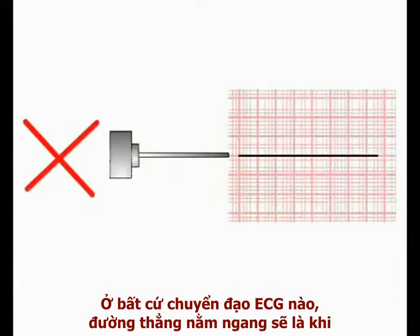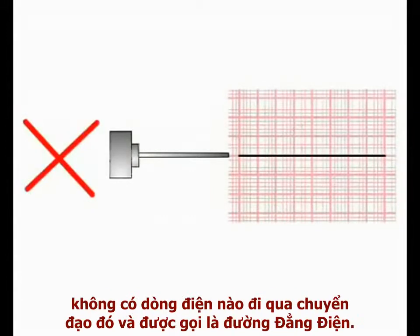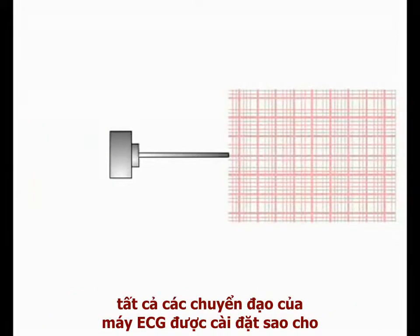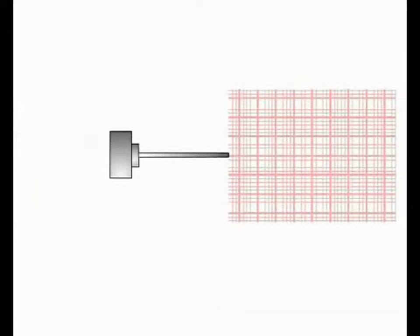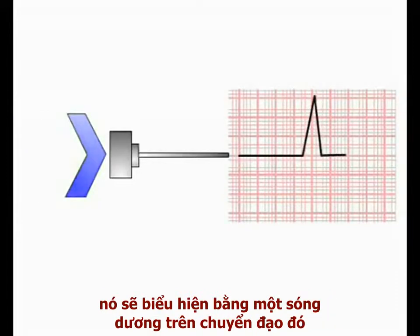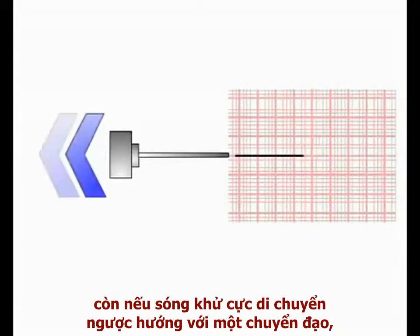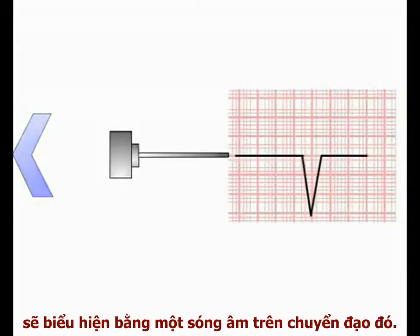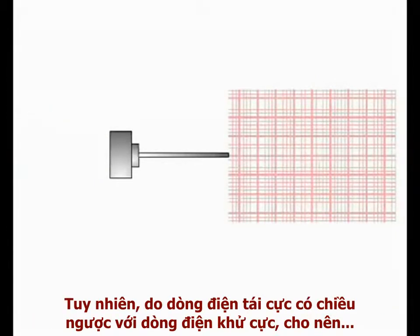In any ECG lead, the flat line recorded on the readout when no net current is flowing is termed the isoelectric line. It is very important to realize that all of the ECG leads are set up such that depolarizing current moving towards a lead produces a deflection above the isoelectric line — a positive deflection — while depolarizing current moving away from the lead produces a deflection below the isoelectric line — a negative deflection.